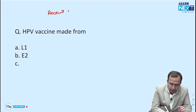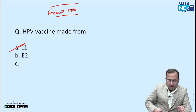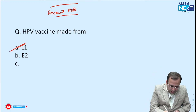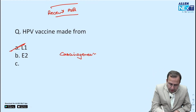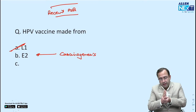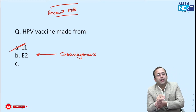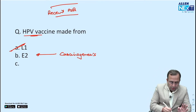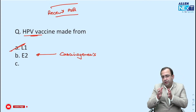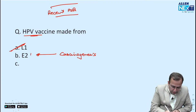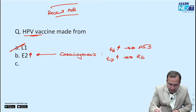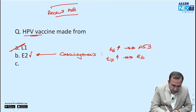This was also a recent NEET PG previous year question. HPV vaccine is made from structural proteins — that is L1 — versus carcinogenesis which is by early proteins. Carcinogenesis is by E2. When integration of viral DNA with host genome occurs, E2 increases, as a result of which E6 and E7 increase. Increase in E6 and E7 inhibits P53 and RB. E2 reduces, so E6 and E7 increase.